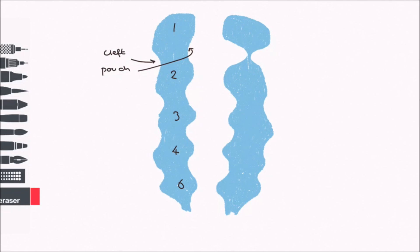The first pouch extends outwards to form the future auditory tube. The first cleft extends inwards to form the external auditory meatus.